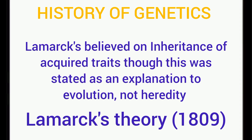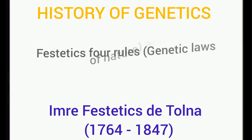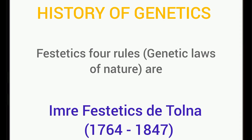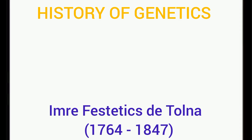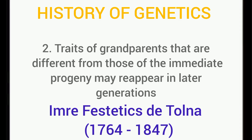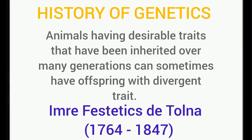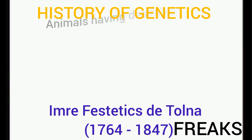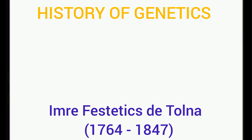Another scientist, Lamarck, believed in the inheritance of acquired traits, though this was stated as an explanation for evolution, not heredity. He postulated this theory in 1809. Another notable scientist was Festetics. Festetics proposed four key theories — what we call genetic laws of nature. These include: healthy and robust animals are able to propagate and pass on their specific characters to the next generation; traits of grandparents can resurface in future generations; animals may produce individuals with unexpected traits in certain generations; and traits can be carefully selected to produce animals with desirable characters.